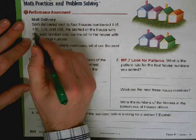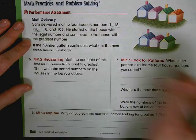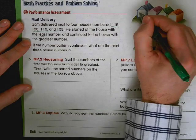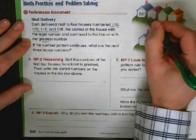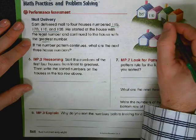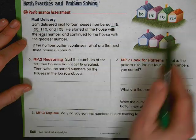So we need to put these in order from least to greatest. So starting with 105 and then 110, 115, 120. And then it says if the number pattern continues, what are the next three house numbers? So 120 and then what would be the next three?